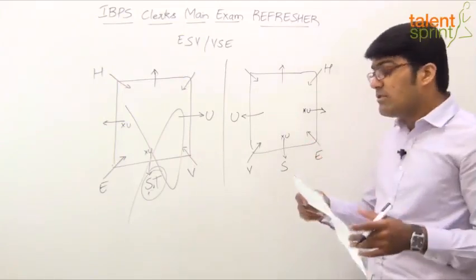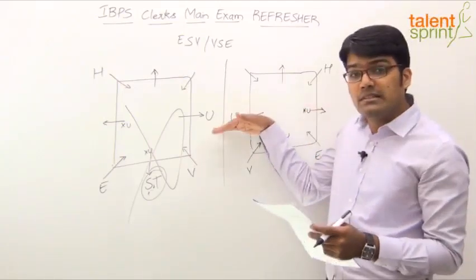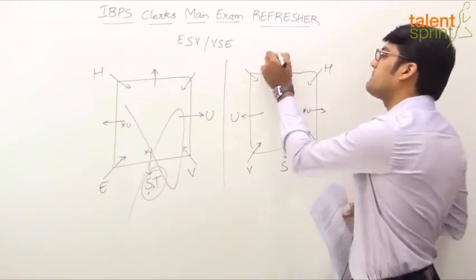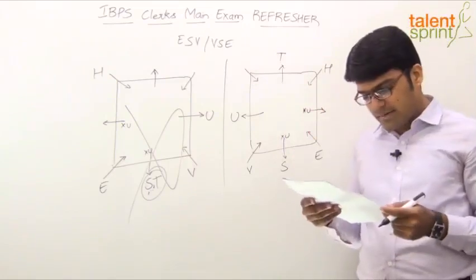Let's check. T is second to the right of U. U is facing outwards. Right is clockwise. Second to the right of U. First and second. T has to come here. Done. Two persons are left. Read the next statement.